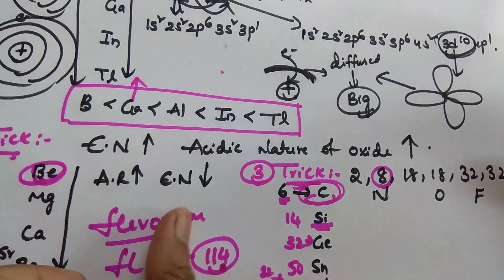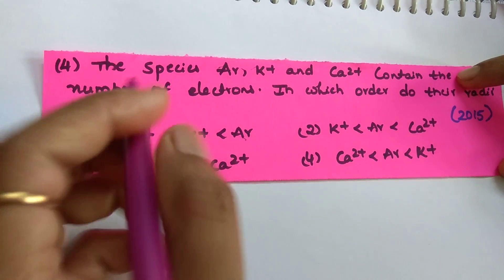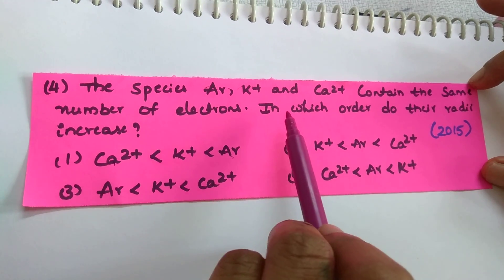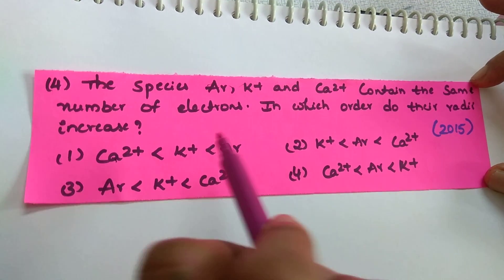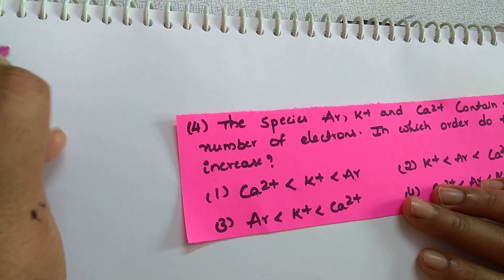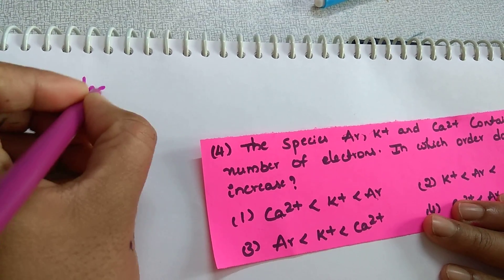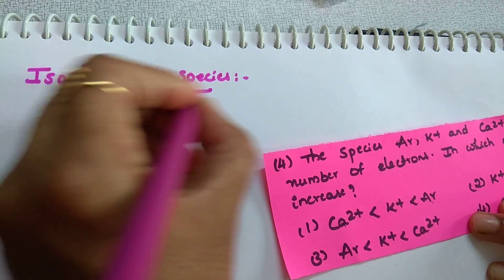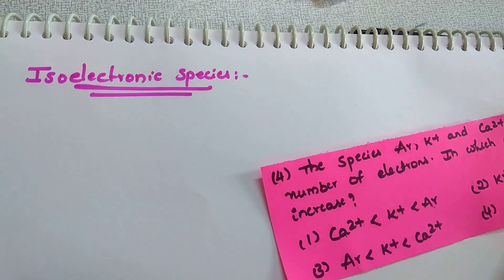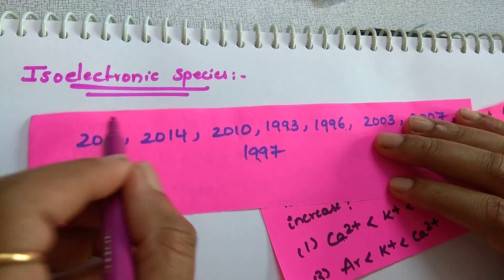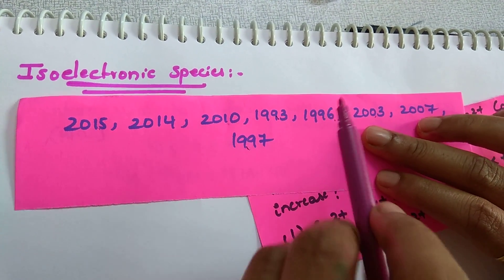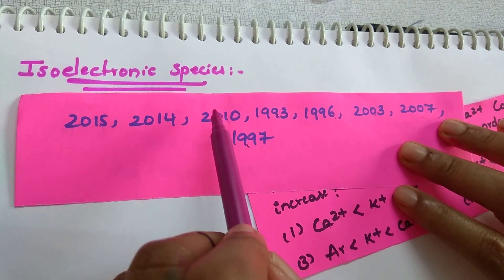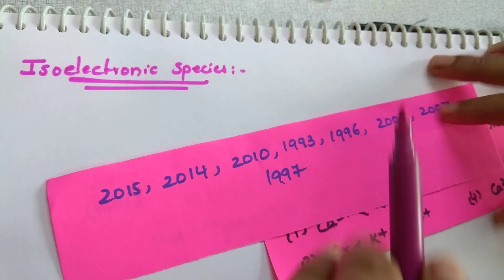Next, a 2017 question - and I will give you one test to do yourself. The species argon, potassium ion, and calcium ion contain the same number of electrons. In which order do their radii increase? This question is from isoelectronic species. This is one of the most important concepts. Questions from this topic have appeared in 1993, 1996, 1997, 2003, 2007, 2010, 2014, and 2015 - so learn this concept well.